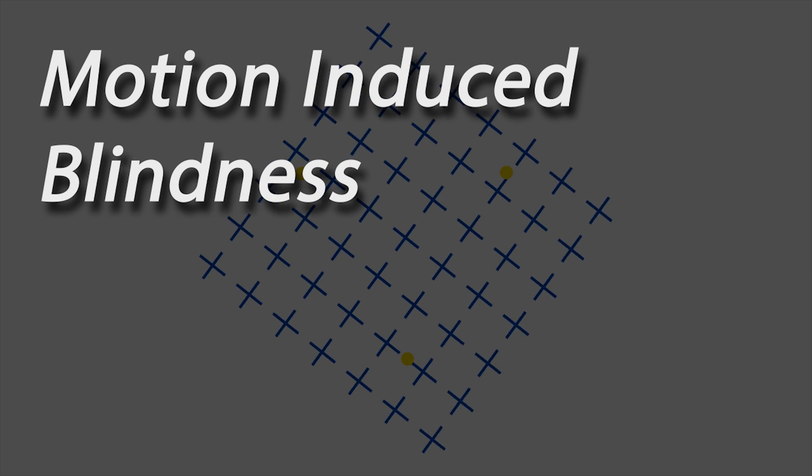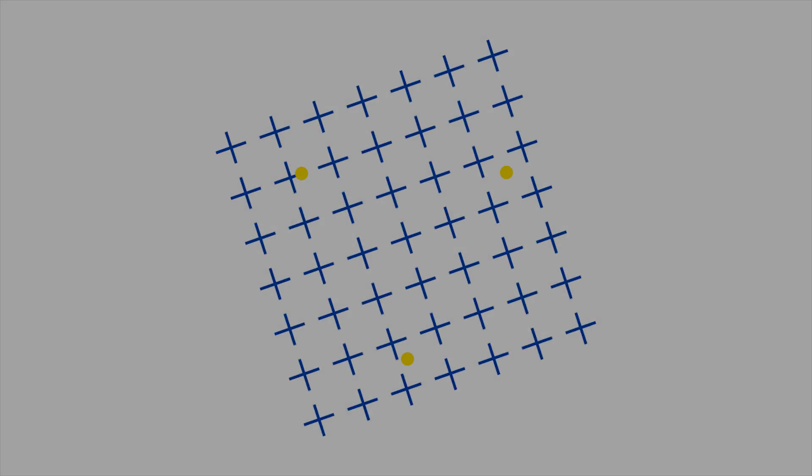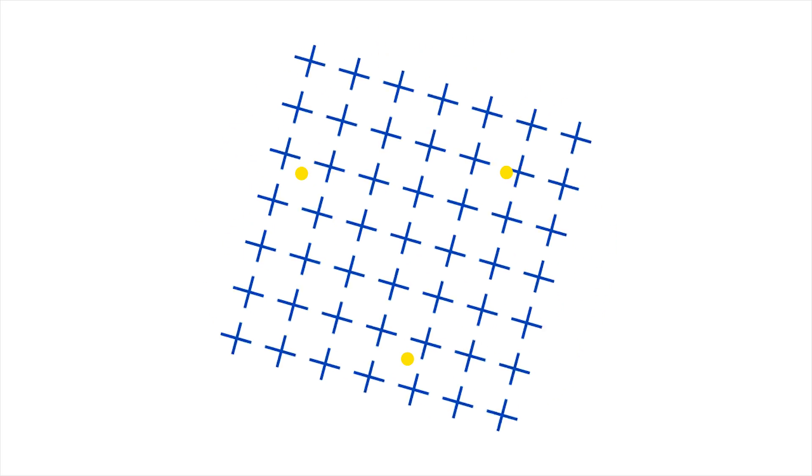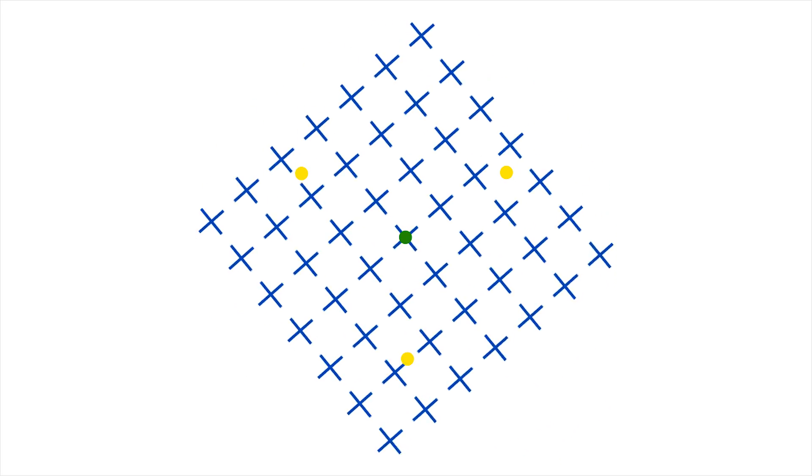This illusion is called motion-induced blindness. Try staring at the blinking green center dot for 20 seconds without moving.